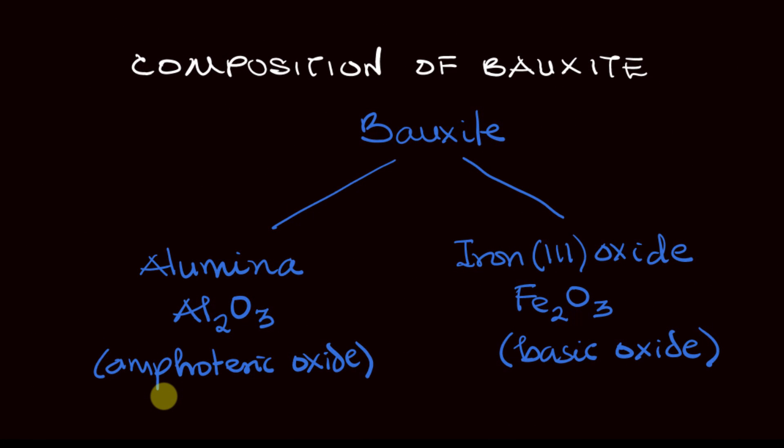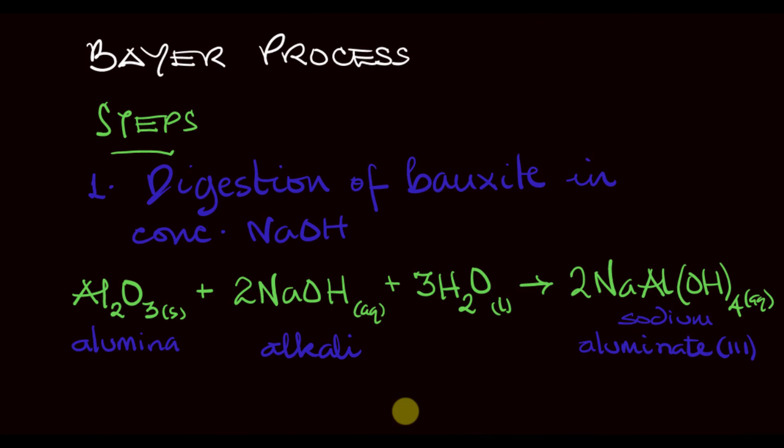Remember we said that alumina is an amphoteric oxide, while iron(III) oxide is a basic oxide. When we digest bauxite with an alkali, the iron(III) oxide in the bauxite will not react with the alkali. It is only the alumina that will react with the alkali to form sodium aluminate. The iron(III) oxide will not dissolve, so it will remain as residue in the mixture and will be filtered off and discarded if we don't have any use for it.